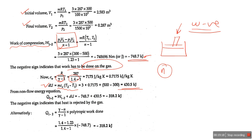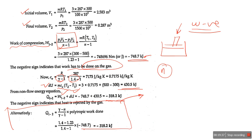Using the non-flow energy equation, work is with us and change in internal energy is with us, so Q = ΔU + W. The heat interaction Q is around -318.2 kilojoule. The negative sign indicates heat is rejected. An alternative method exists for calculating Q, but going through the basic fundamental equation is very simple compared to the alternative.